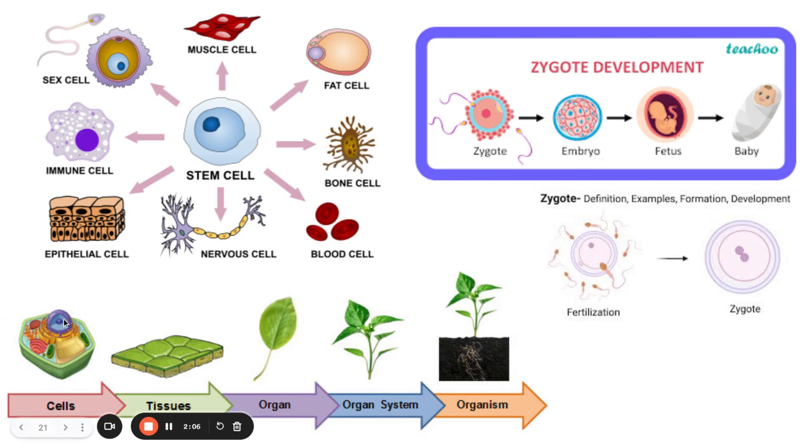And then we know that that specialization is required to make different tissues, to make different organs for the different organ systems that make up the individual as a whole.